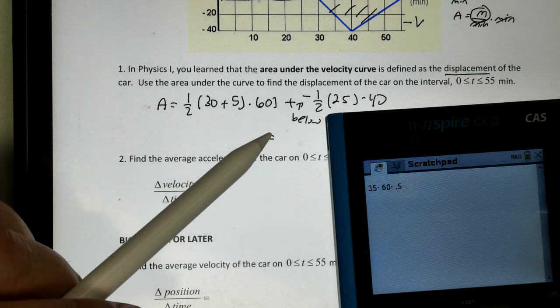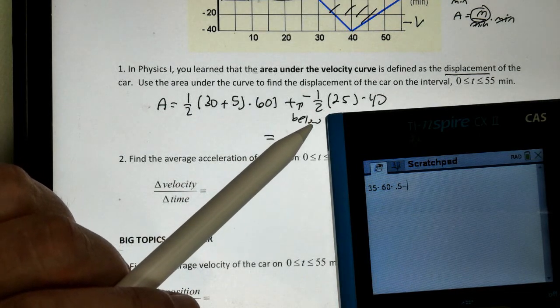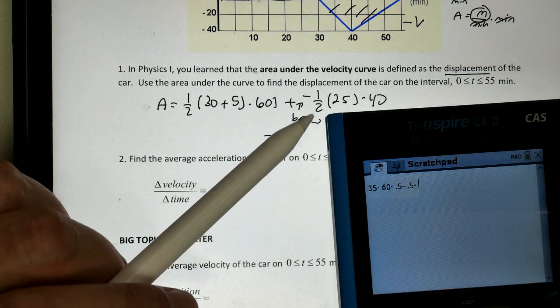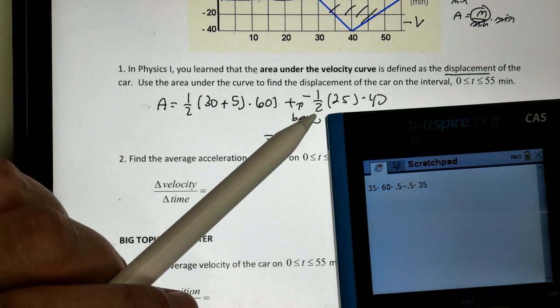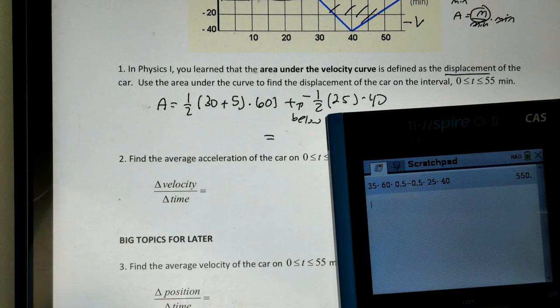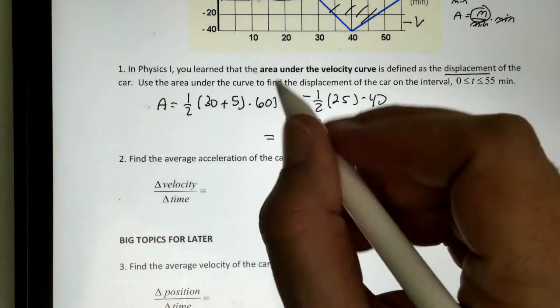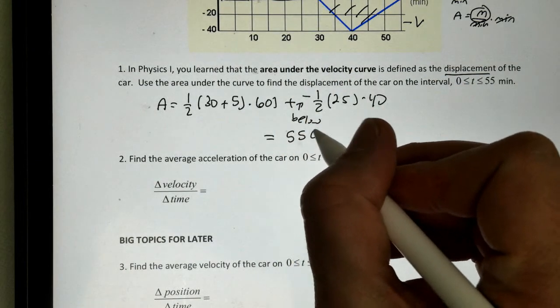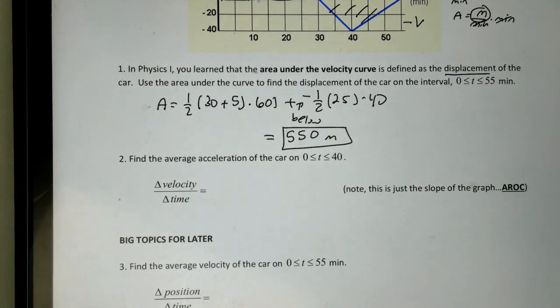minus 0.5 times 25 times 40. And that gives us 550. So what this tells us is that we had a displacement of 550 meters.